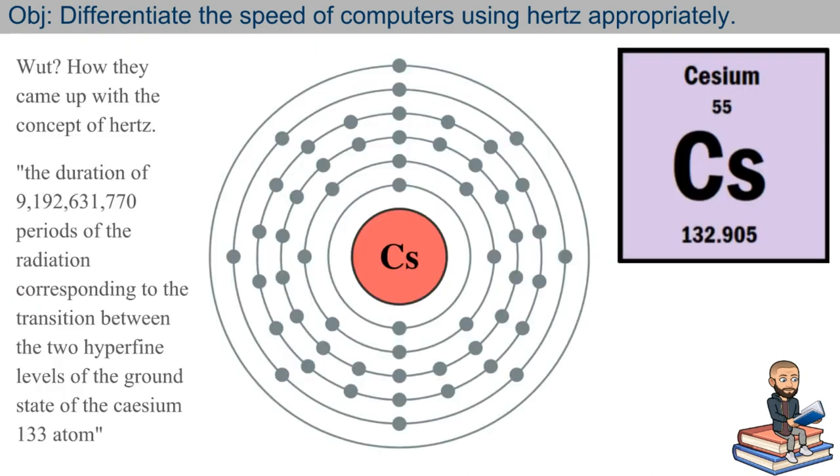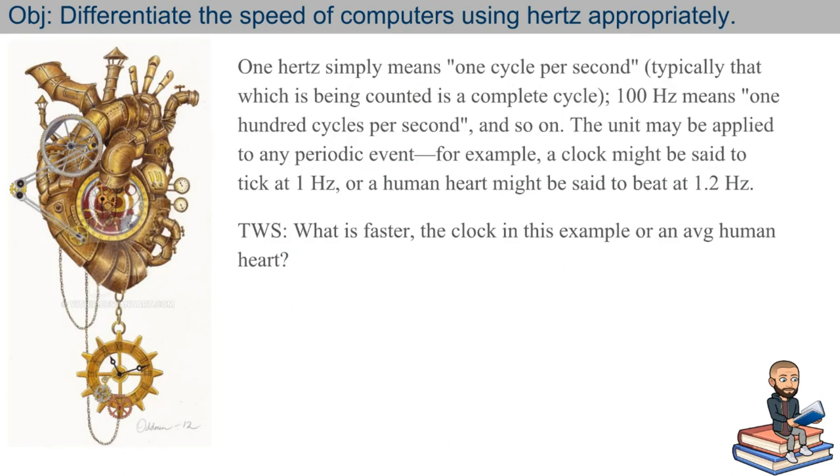So to determine how fast something really is, let's talk a little bit about what a second is. So when I say hertz, I mean the period of time in which 9 billion periods of radiation corresponding to the transition between two hyperfine levels of the ground state of the cesium atom. Extra credit if you can explain to me what all of this means, I have no idea. But apparently scientists agree on it, which means we can use hertz to mean one cycle per second.